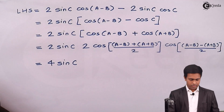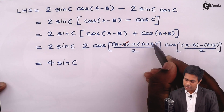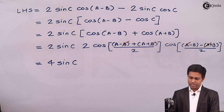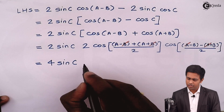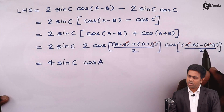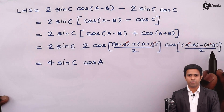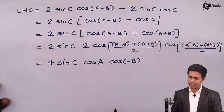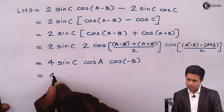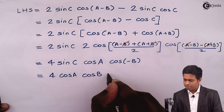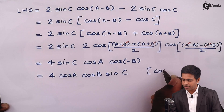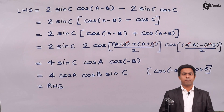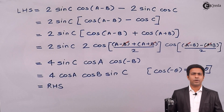Simplifying the arguments: in the first cosine, minus B and positive B cancel, giving 2A/2 which is cosA. In the second cosine, A and negative A cancel, giving minus 2B/2 which is cos(minus B). Using the property cos(minus θ) equals cosθ, cos(minus B) equals cosB. So we get the final answer: 4 times cosA cosB sinC, which is exactly our required right hand side. Thus we have proved the result using the properties of angles of triangle.